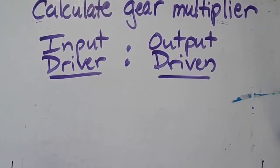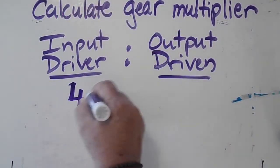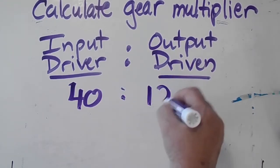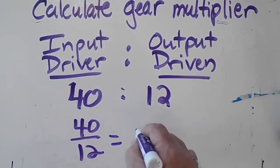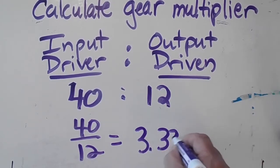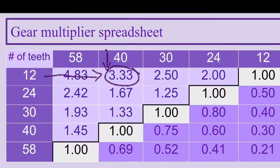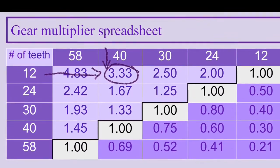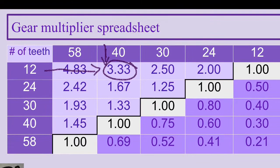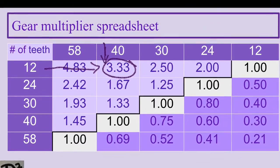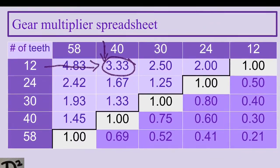A pairing of 40 to 12 produces a gear multiplier of 3.33. Notice that a 58 to 58 pairing produces a gear multiplier of 1, as does every other pairing of the same gears, and therefore does not offer any mechanical advantage other than a change in direction of the force.